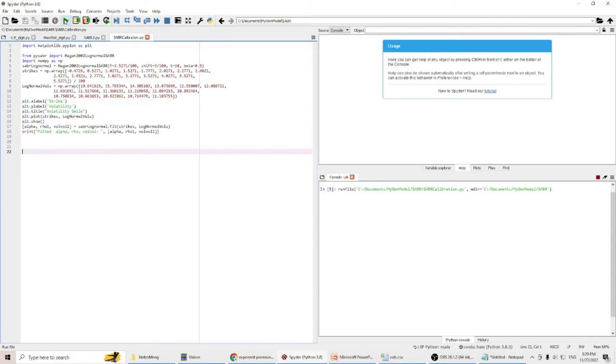Let's run the program. You can see here, this is the data for our input. This is strike price here, and this is volatility here.